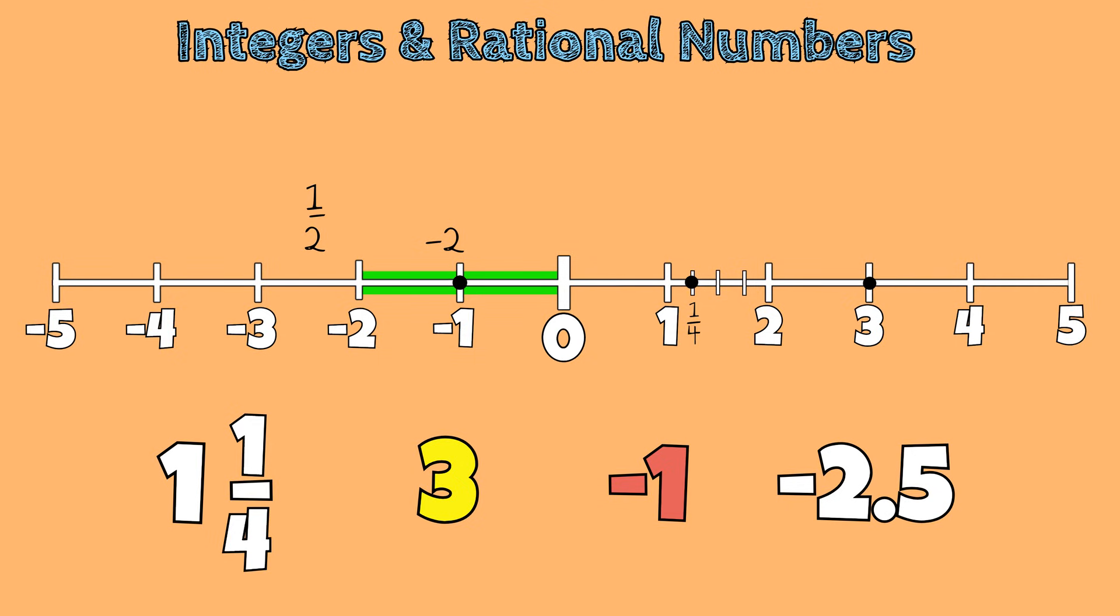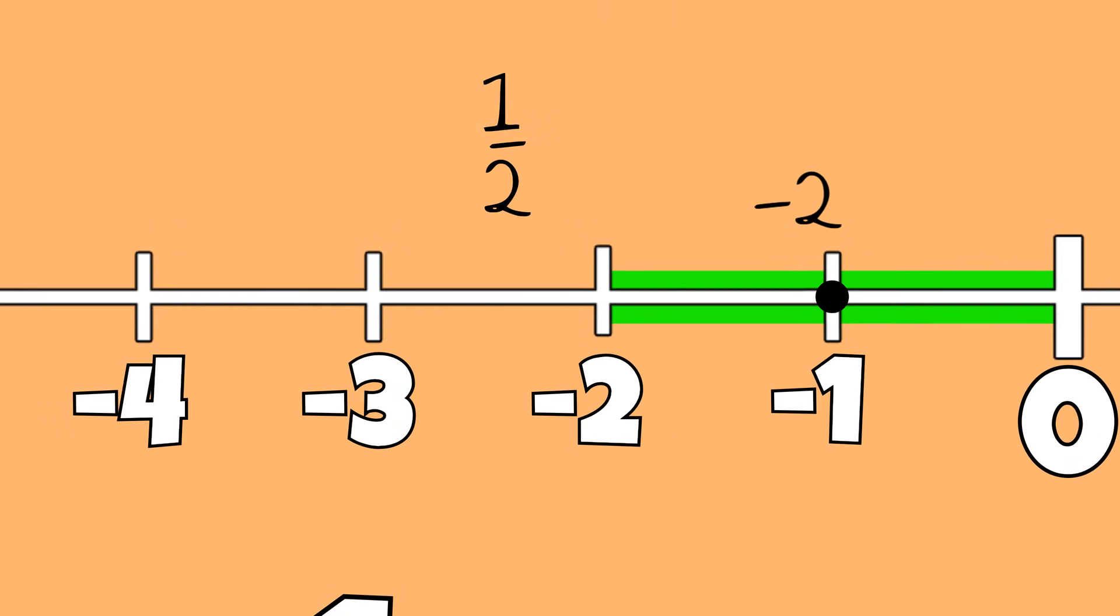Since we have a denominator of 2 in the fraction 1 half, I will partition our whole into two equal parts. I can now move half a unit to the left to represent negative 2 and a half.